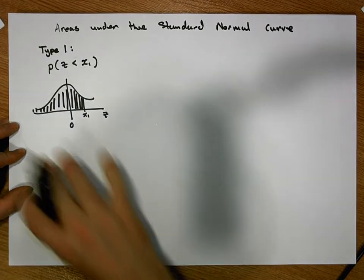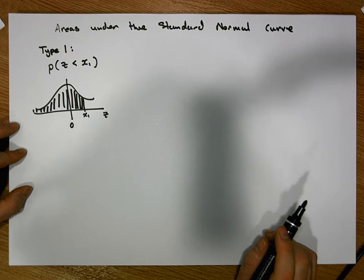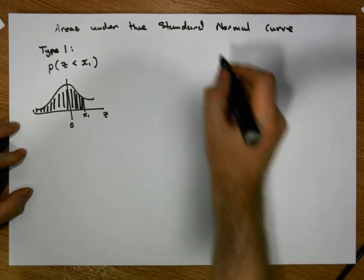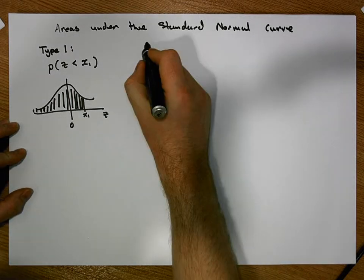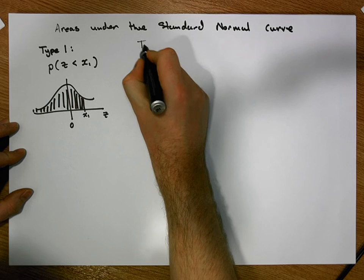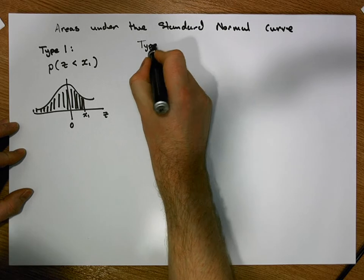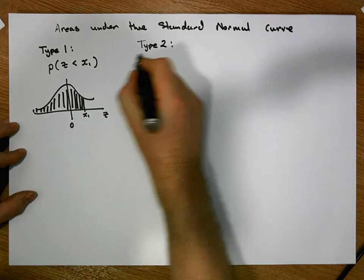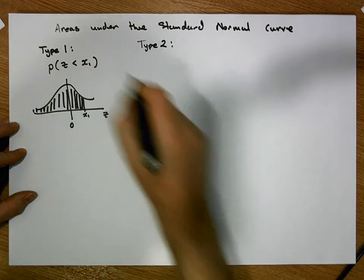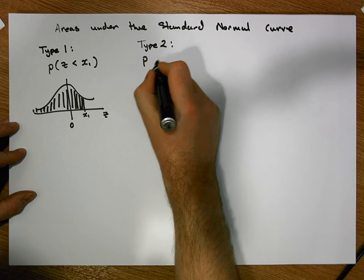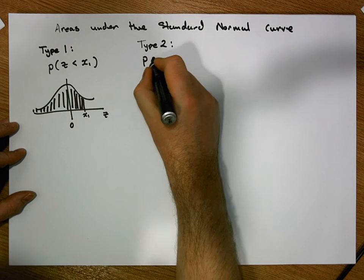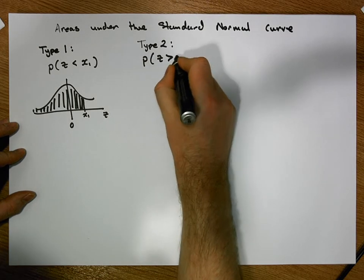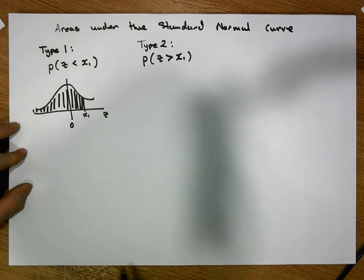We'll have a short video on type 1 areas to come later on. The next type is going to be dealing with what we're going to call type 2 areas. In this case it's similar to the type 1 area, but this time we're interested in calculating the probability of observing a z score that's greater than a particular positive value.